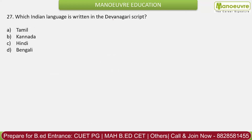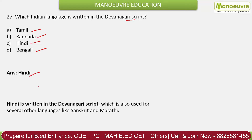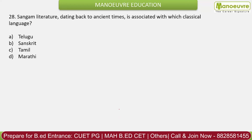Question 27: Which Indian language is written in Devanagari script? Options: Tamil, Kannada, Hindi, Bengali. The correct answer is Hindi. Hindi is written in the Devanagari script, which is also used for several other languages like Sanskrit and Marathi.